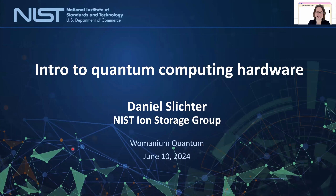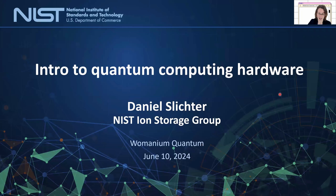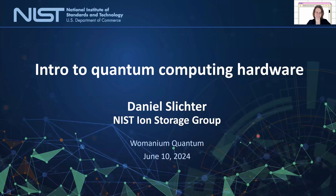Daniel Slichter is a staff physicist in the ion storage group at NIST Boulder. His research focuses on quantum information experiments with trapped atomic ions, with an emphasis on developing new paradigms for scalable trapped ion quantum computing. He is the perfect lecturer for today because he is not only an expert in trapped ion quantum computing, but he also used to work in superconducting quantum information and performed the first continuous high fidelity measurement of a superconducting qubit. We are really excited to have you here, Daniel. Could you share a little bit about NIST, the place where Dave Wineland won the Nobel Prize for trapped ion quantum computing, and where a lot of the start for quantum information science has been happening?